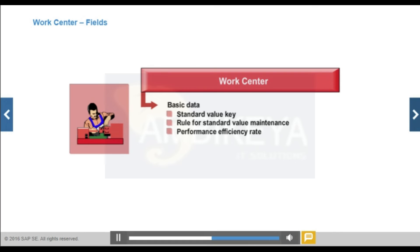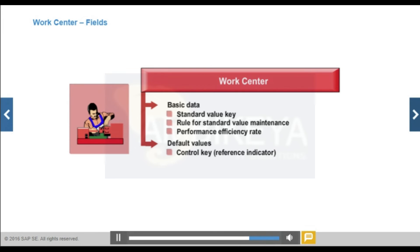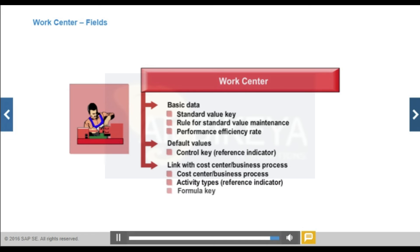You can define default values for the routing or master recipe in the work center or resource respectively. When an operation in the routing or a phase in the master recipe is assigned to that work center or resource, the default values are transferred to the operation or phase. The following default values are relevant to costing: the Control Key, which specifies whether the operation or phase is included in costing, whether it is processed internally or externally, and whether and how it is confirmed. The Reference Indicator prevents the control key from being changed in the routing.